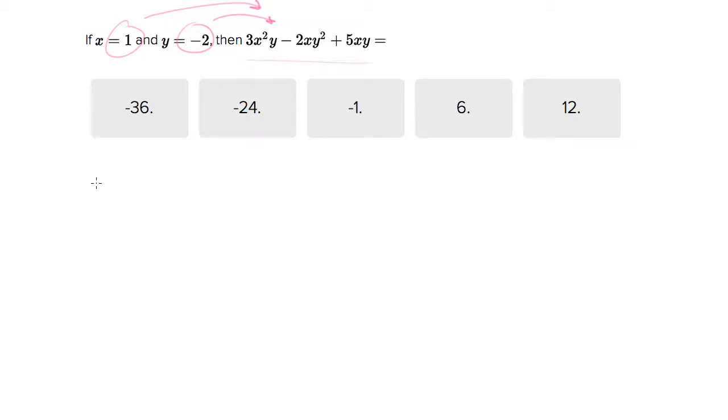Then simplify it to get the answer. So let's put in everywhere we have an x we're gonna put in a 1, so this becomes 3(1)² and every time we have a y we're gonna put in a negative 2.